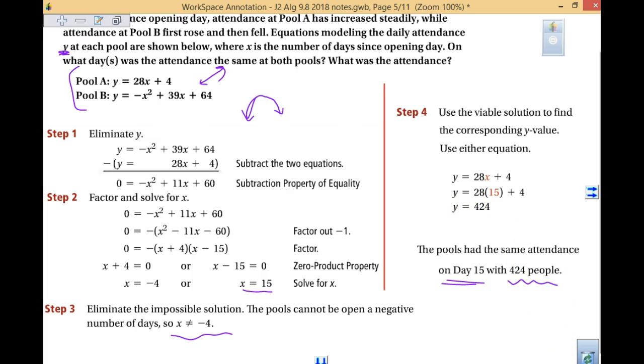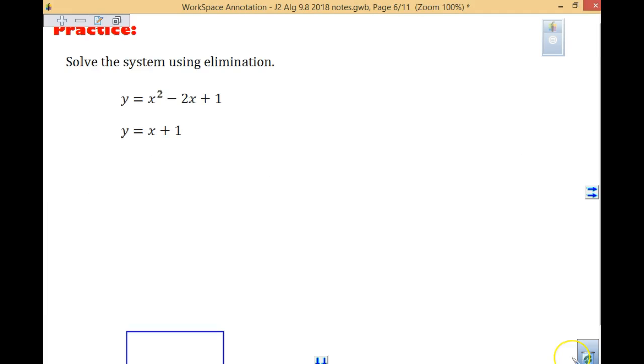When you're doing the problems tonight in your homework, you're doing 11 to 16, 21 to 23 all. There's not a ton of problems, but you're going to be doing one of each type, substitution and elimination. So let's take a look at this last page in your notes.